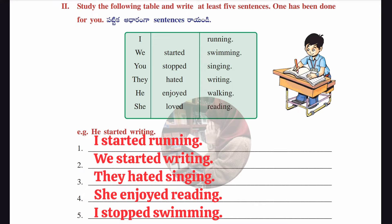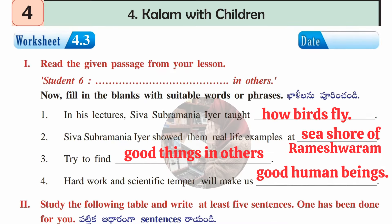Worksheet 4.3. The first section has a passage 'Student Six to In Others' with fill-in-the-blanks. Answers: first — in his lectures, Siva Subramaniam Iyer taught how birds fly; second — Siva Subramaniam Iyer showed them real life examples at the seashore of Rameshwaram; third — try to find good things in others; fourth — hard work and scientific temper will make us good human beings.